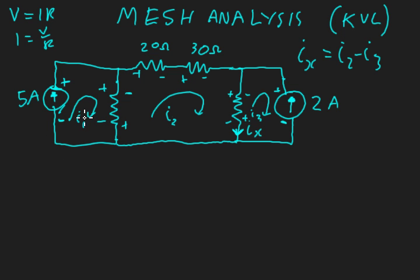Right, so using these three meshes and Ohm's law V equals IR, I'm going to make three equations for each mesh. The first one I1, well that's just going to be five amps. The second one I2, that's going to be a bit more tricky. I'll do that last because I already know that I3 is going to be negative two amps as I just mentioned.